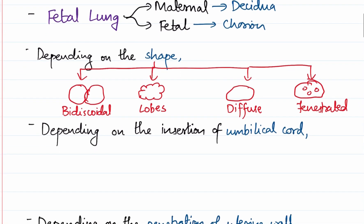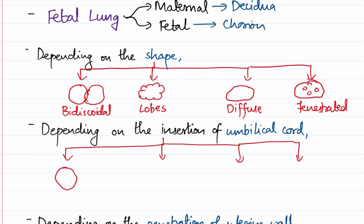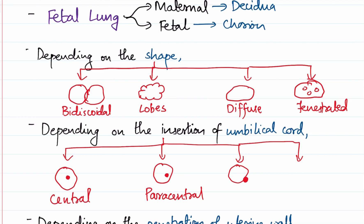Depending upon where the umbilical cord is inserted, there are again several different types — we will discuss four. If the umbilical cord is inserted at the center, the placenta is called central. If inserted a little away from the center, it is a paracentral placenta. The umbilical cord may also be inserted at its margin — this is called marginal insertion. Sometimes the umbilical vessels furcate and divide into several branches which then get inserted into the placenta; such a placenta is called a furcate placenta.